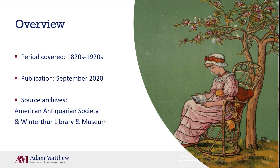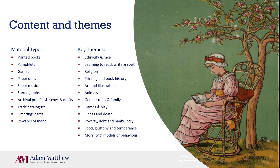The resource will contain over 8,000 individual documents sourced from two archives: the American Antiquarian Society and the Winterthur Library and Museum. Within those documents will be a broad spread of formats — everything from books and pamphlets to sheet music, toys and games, stereo photographs, and original watercolor artworks.